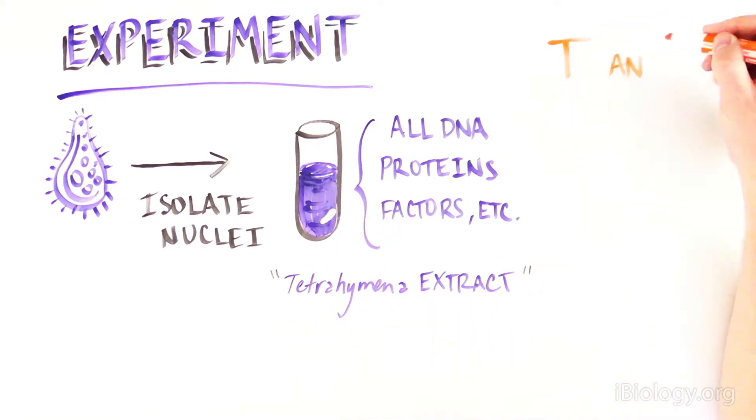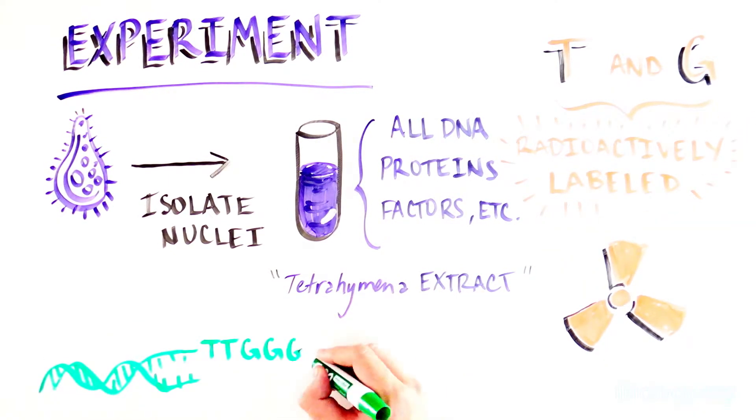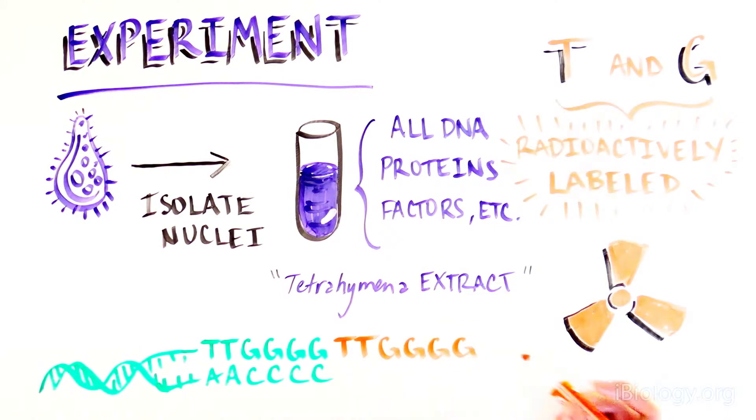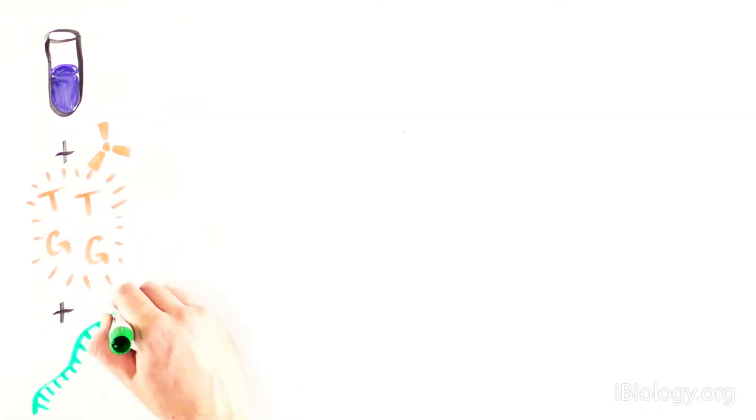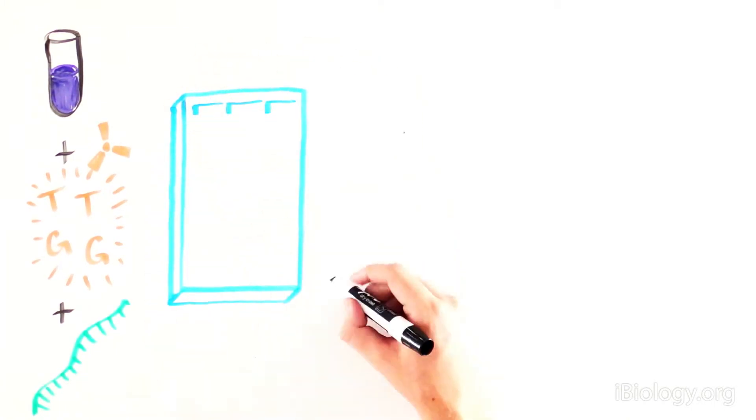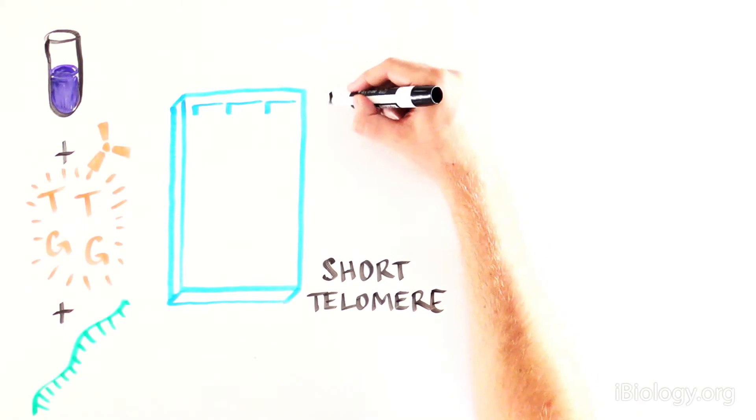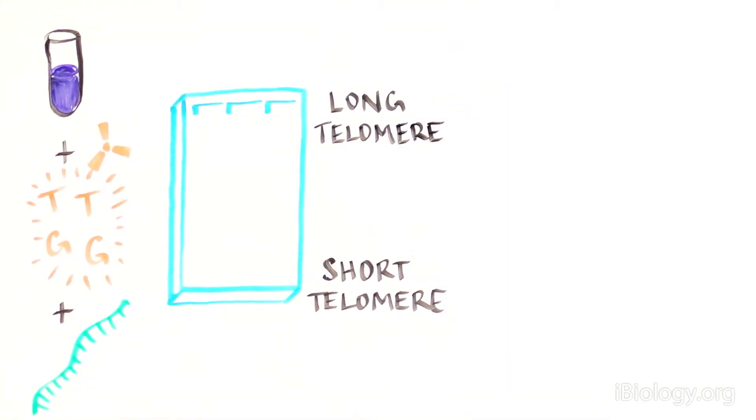They labeled T or G nucleotides with radioactivity. These nucleotides would be incorporated into the newly formed telomeres and radioactively label this new sequence. The scientists mixed the extract, radioactively labeled T and G nucleotides, and a single-stranded DNA template that mimics an already existing telomere in a test tube. Then the scientists looked at the ability of the tetrahymena extract to extend the telomere template.